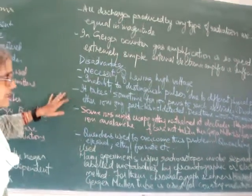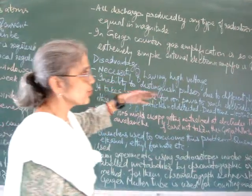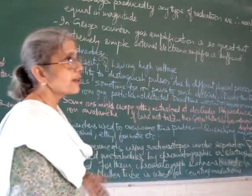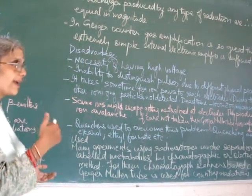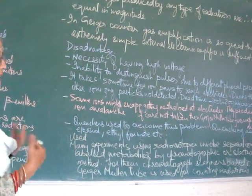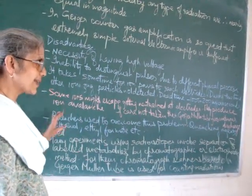It takes some time for the ion pairs to reach the electrodes. During this time if another radioactive event takes place, it cannot be counted because the gas is already ionized. This is known as the dead time.